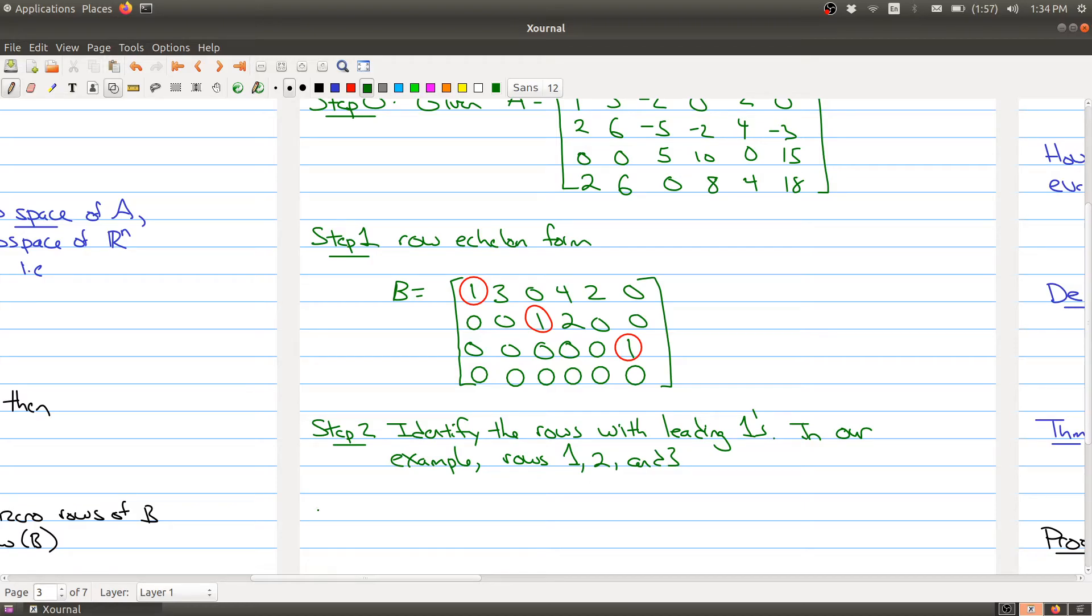So that gives us three vectors, right? We get three different rows, we get our three vectors. We get 1, 3, 0, 4, 2, 0, transpose. Then we have R2, which is going to be 0, 0, 1, 2, 0, 0, transpose. And then R3 is the last row, right? 0, 0, 0, 0, 0. Hopefully I have the right number of zeros here. Yep, 1, transpose.